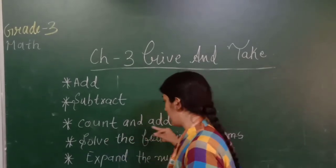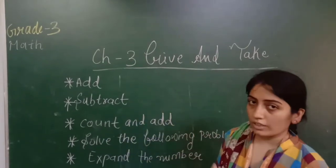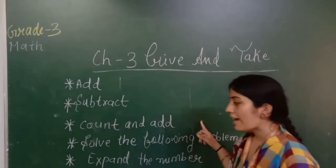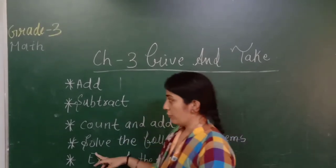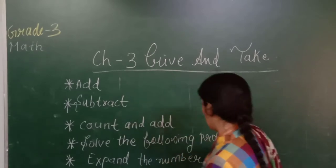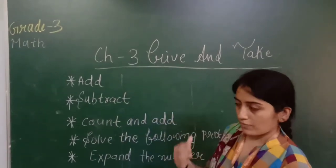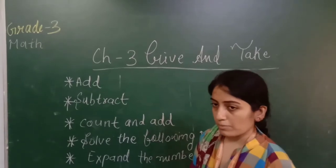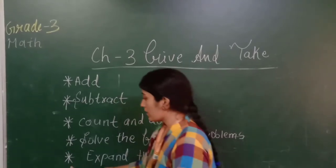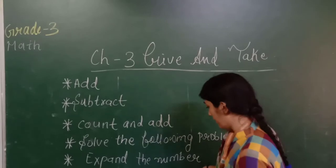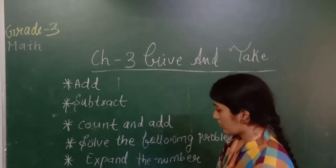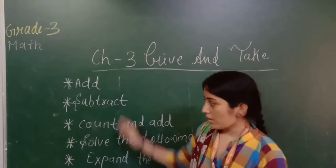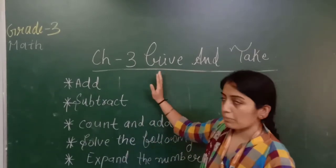The third topic is count and add — kuch count karke aur humko usko plus karna hai, that is called count and add. Fourth, solve the following problems — some problem sums are given, we have to read and complete that problem sum. Next, expand the number — humko numbers ko expand karna hai. Yeh sab topics hum yeh chapter mein padhenghe.